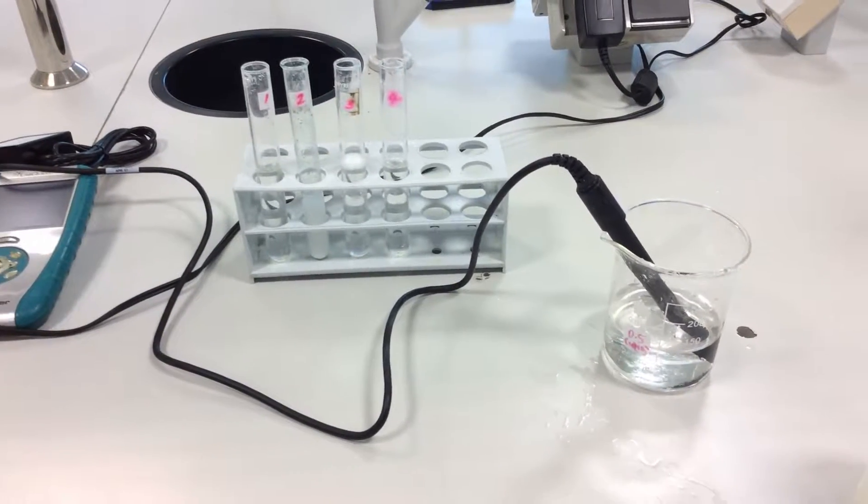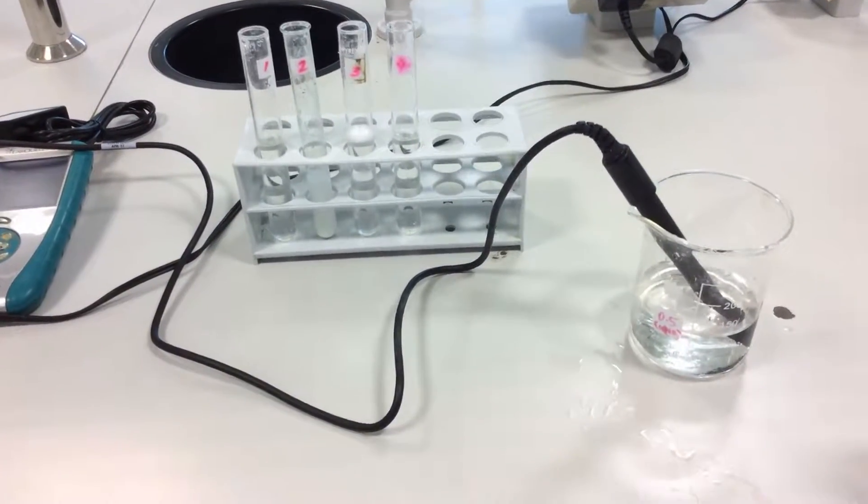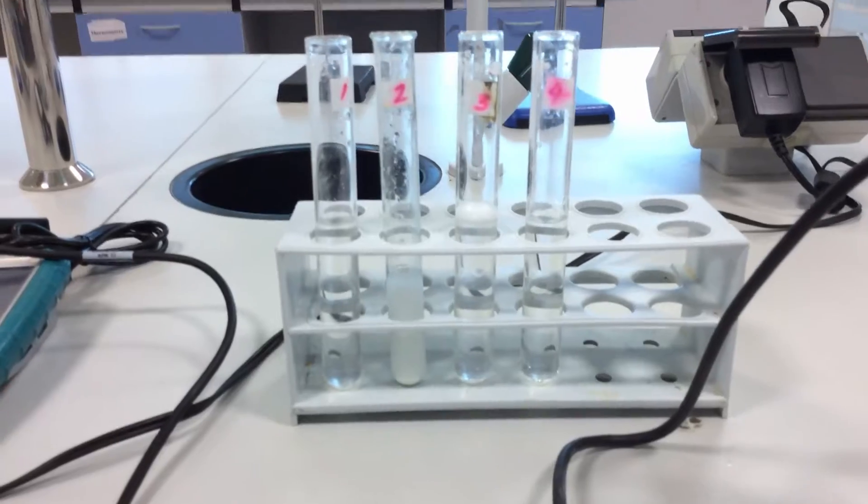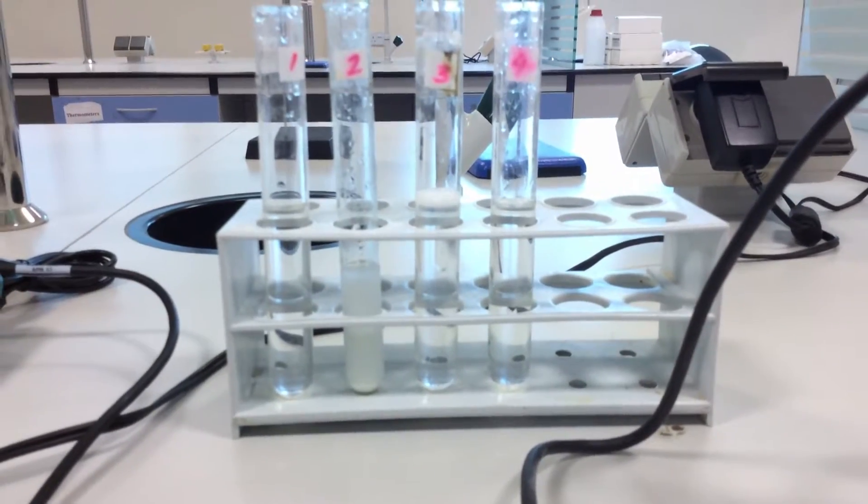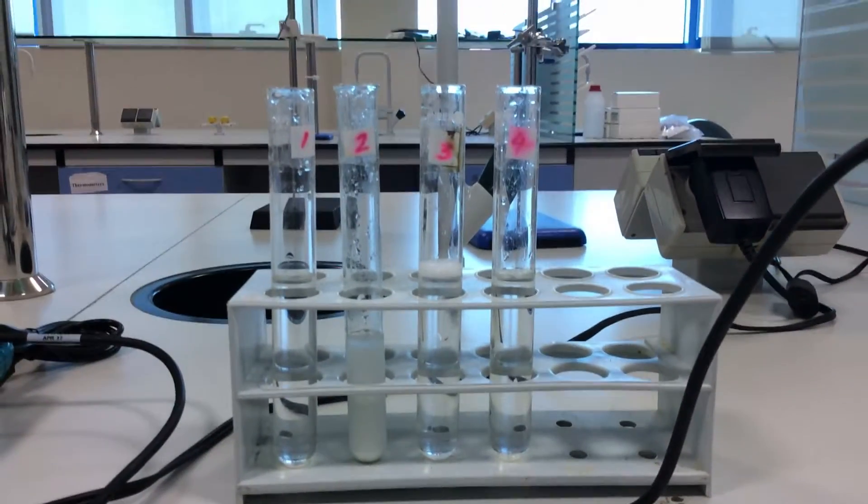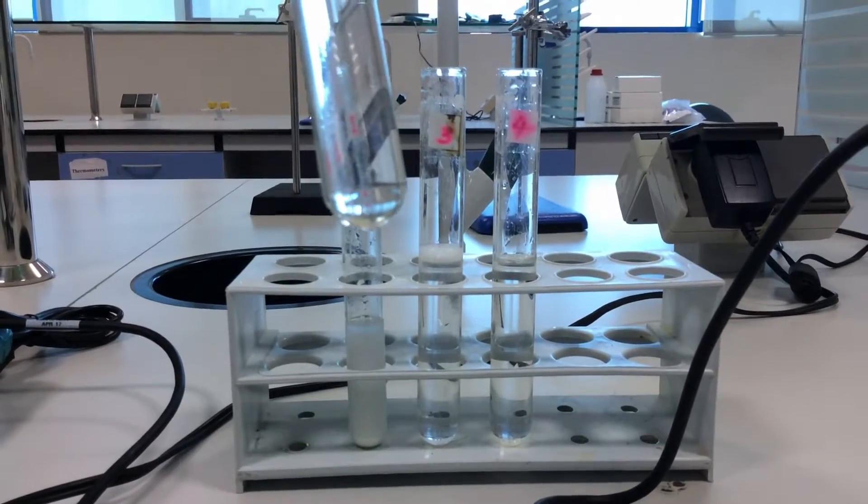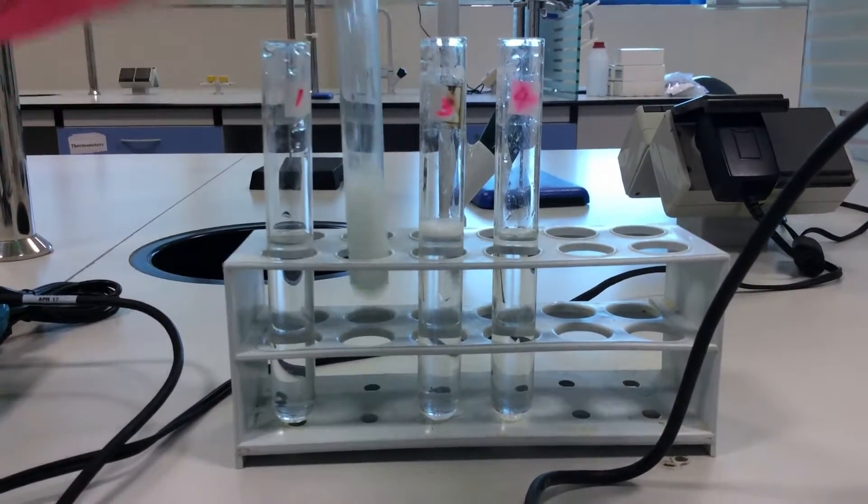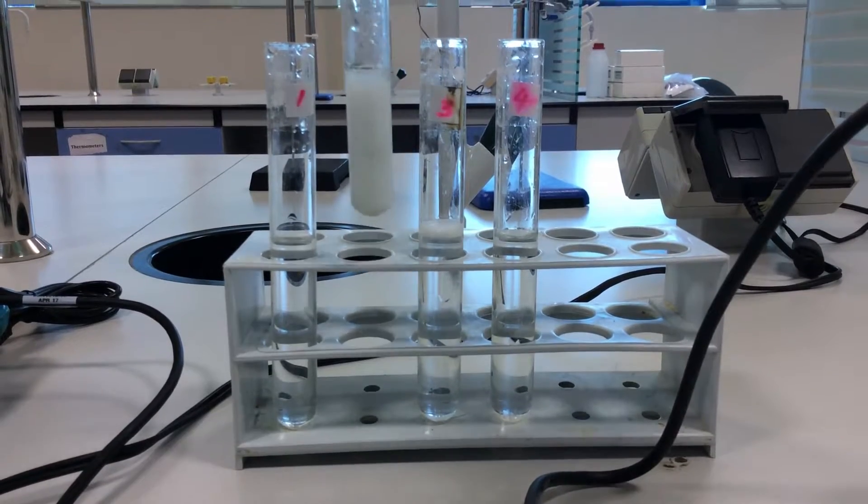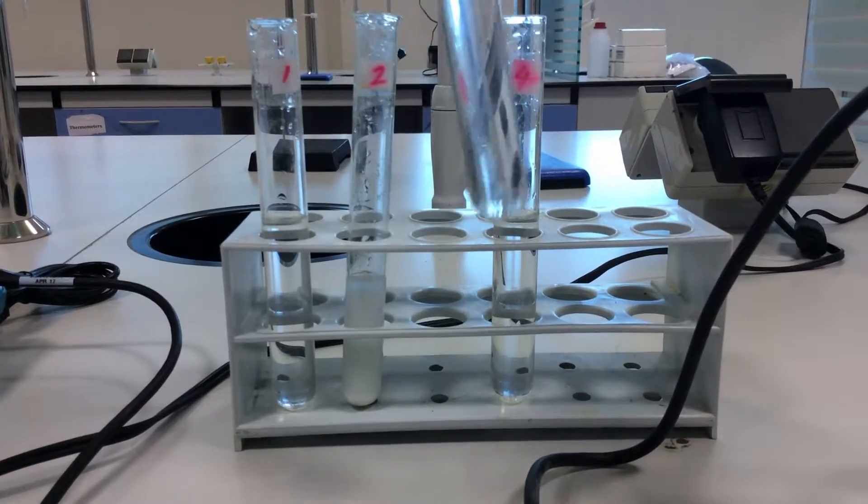Okay, now we are back with our second part of this experiment. As you can see here, we have those four test tubes. I remind you that the first one contains sodium chloride, the second one contains starch, the third one contains magnesium sulfate, and the fourth one contains glucose.